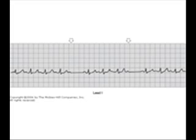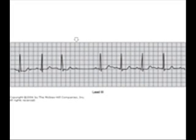Mobitz Type 1 is usually symptomatic. All you have to do is stop the offending drug — most commonly it is caused by digoxin, beta blockers, or calcium channel blockers. So the Wenckebach phenomenon is a prolonged PR interval with a dropped beat.